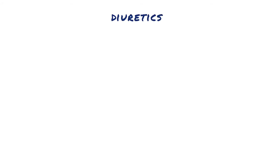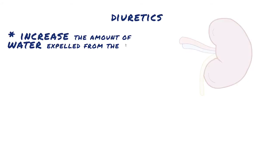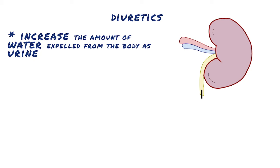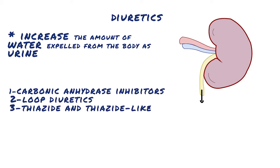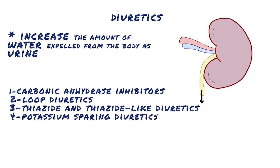Diuretics are medications designed to increase the amount of water expelled from the body as urine. There are five main types of diuretics: carbonic anhydrase inhibitors, loop diuretics, thiazide and thiazide-like diuretics, potassium-sparing diuretics, and osmotic diuretics.